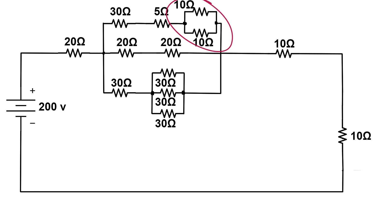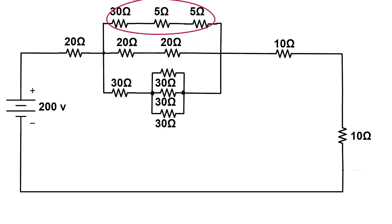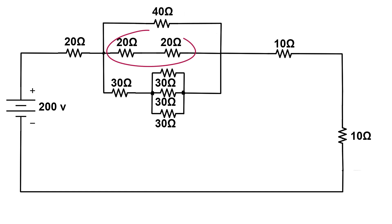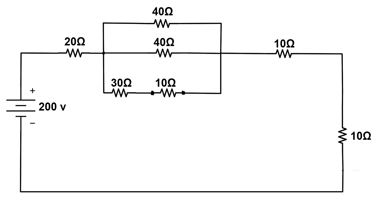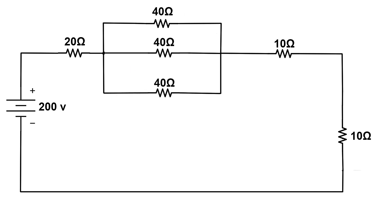Here, 10 ohms parallel to 10 ohms equals 10 over 2, which is 5 ohms. Then 5 ohms in series with 5 ohms and 30 ohms equals 40 ohms. Here we have 20 ohms in series with 20 ohms, which equals 40 ohms. Three 30-ohm resistors are in parallel: 30 parallel to 30 parallel to 30 equals 10 ohms. That 10 ohms is in series with 30 ohms, giving 40 ohms. Now 40 parallel to 40 parallel to 40 equals 40 over 3.